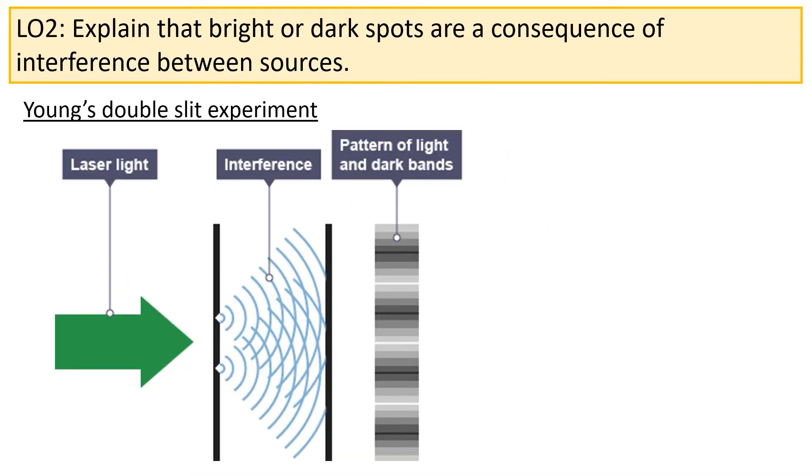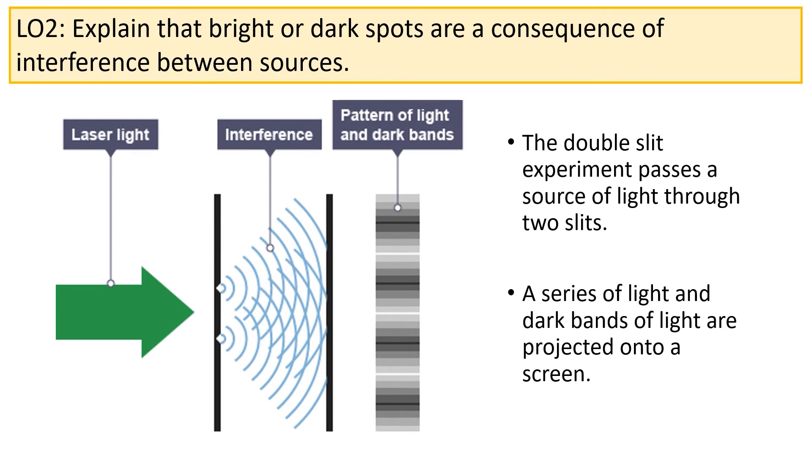Young's double slit experiment was very similar to this, except instead of using sound waves, Young used light. Light was passed through two slits, which then acted as two independent sources of light. As the light passed through these slits, it diffracted out and was projected onto a screen.